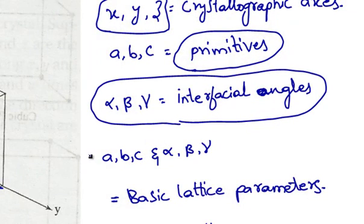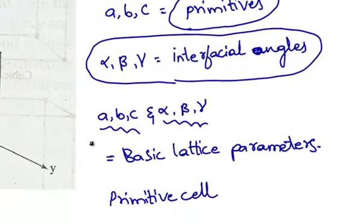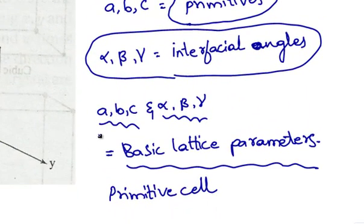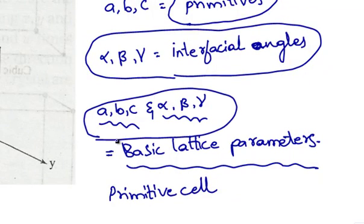The primitives A, B, C and interfacial angles alpha, beta, gamma are known as the basic lattice parameters. So these are the basic lattice parameters. The unit cell formed with primitives A, B and C is known as a primitive cell.